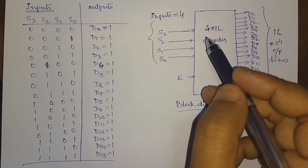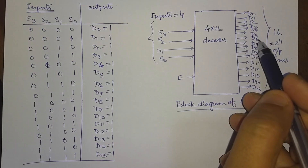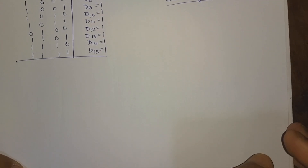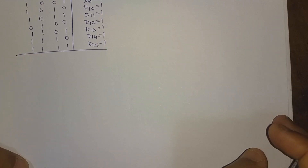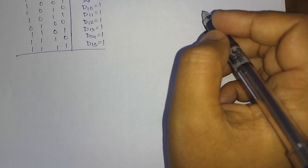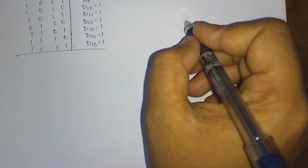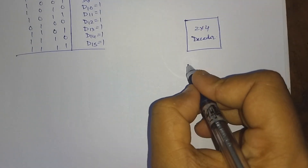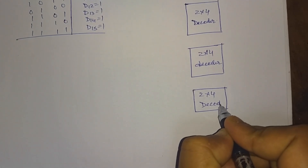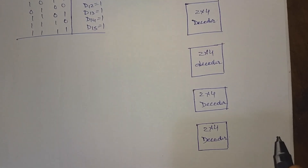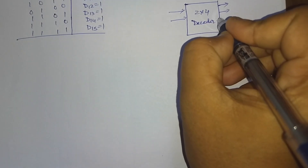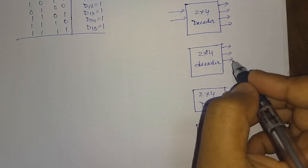So we need to design this 4x16 decoder using a 2x4 decoder. Let us first draw 4 numbers of 2x4 decoders. We will require 4 numbers of 2x4 decoders. So each decoder will have 4 output lines, that means a 2x4 decoder.